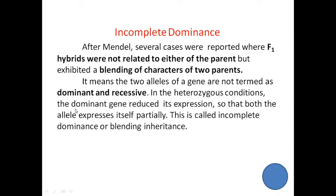In the heterozygous condition — one capital and one small allele — the dominant gene reduces its expression; it does not give complete expression. So both the so-called dominant and so-called recessive alleles express themselves partially, about 50-50. That is why F1 generation individuals do not look like the dominant parent. This is called incomplete dominance or blending inheritance.